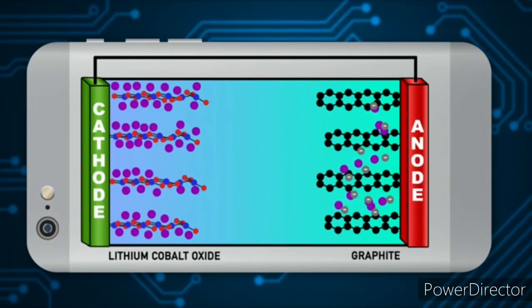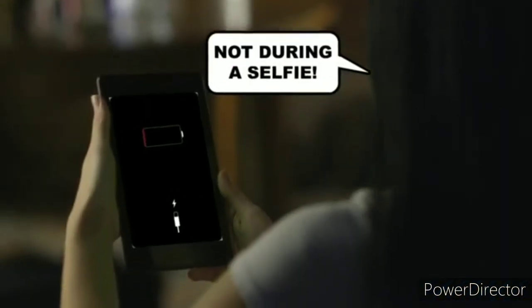When you unplug your phone, the process reverses. Lithium atoms at the anode start losing their electrons. The electrons zip through the circuit, providing the current to run your phone. Meanwhile, lithium ions journey through the electrolyte. They reunite with the electrons at the cathode. These processes keep going until all ions reach the cathode, causing that dreaded flashing battery symbol.